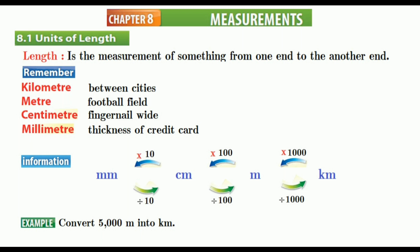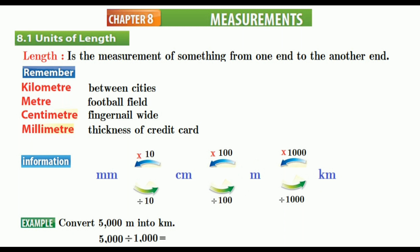Now let's see an example. Convert 5000 meters into kilometers. What is given: 5000 meters. What do we want to find: kilometers. Meter is here on our chart — we want to go to the right side toward kilometer, so we go down and divide by 1000. Five thousand divided by one thousand equals 5 kilometers.